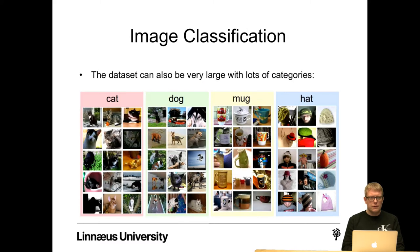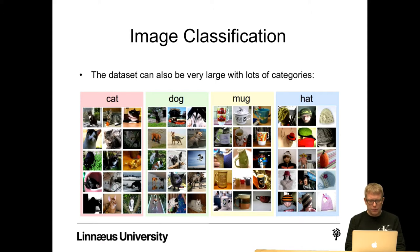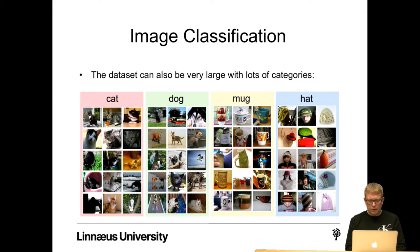The dataset can also be very large with lots and lots of categories. We have the red category, which are cats, and they all look quite different. The green category are dogs. The yellow category mugs, and we see that the mug can obviously also look very different. And the blue one is hats, and we have quite many different hats as well.